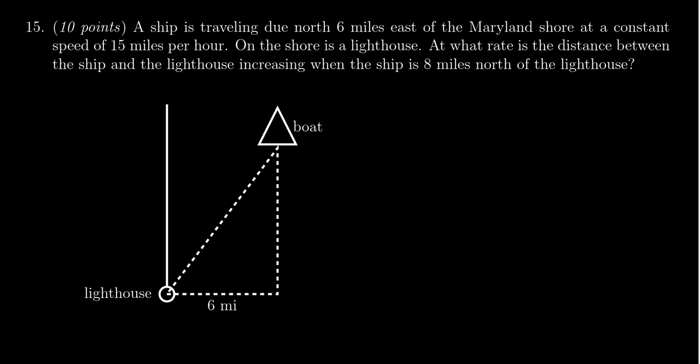A ship is traveling due north, 6 miles east of the Maryland coast, at a constant speed of 15 miles per hour. On the shore is a lighthouse. At what rate is the distance between the ship and the lighthouse increasing when the ship is 8 miles north of the lighthouse?